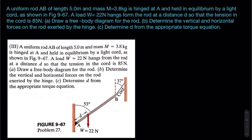This figure shows an object in equilibrium. The object is a rod AB. This rod has a length of five meters and a mass of 3.8 kilograms. It is hinged at A and is attached by a light cord from the other side to the wall.